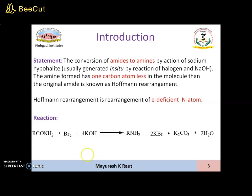The general reaction of Hoffman Rearrangement is shown below, wherein the starting material is amide. It reacts with bromine and base, that is either NaOH or KOH, to give amine.